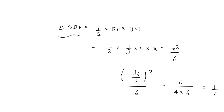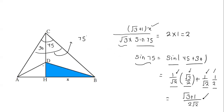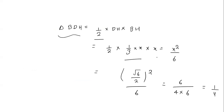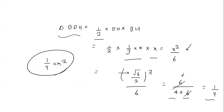Now we know X = √6/2. The area of triangle BDH = ½ × DH × BH. BH = X and DH = X/3, so area = ½ × (X/3) × X = X²/6. With X = √6/2, X² = 6/4, so area = (6/4)/6 = 1/4 cm².